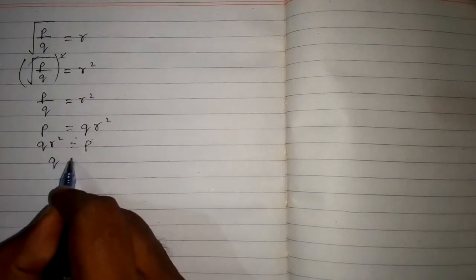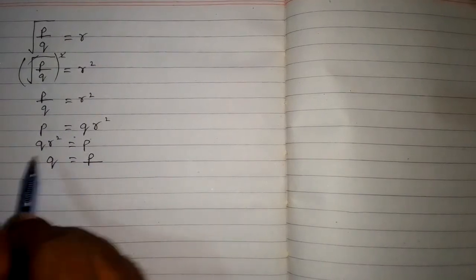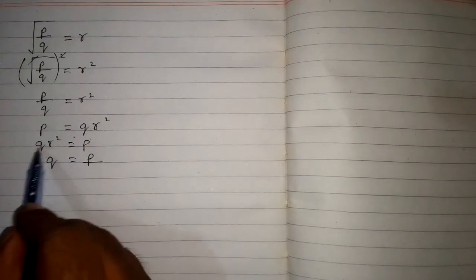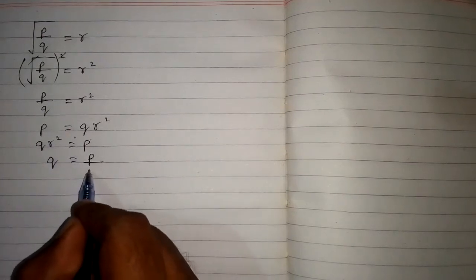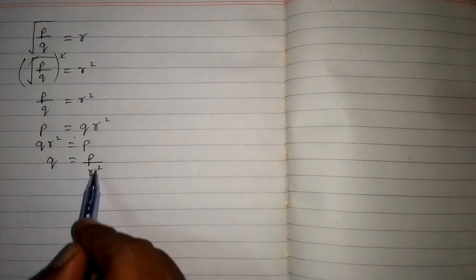Then we will take R square on the other side of the equation. Since R square is multiplying on this side, it will divide P on the other side. So Q equals P upon R square.